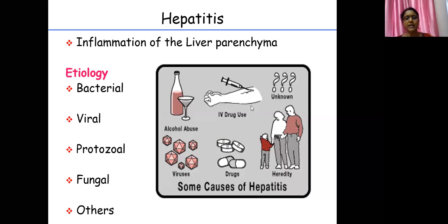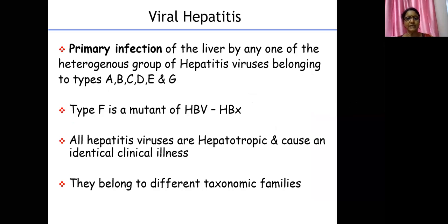There can be infectious and non-infectious causes. Among the infectious agents, it can be bacterial, viral, protozoal, fungal, etc. Non-infectious causes include alcoholic hepatitis, IV drug users, hereditary factors, as well as drug-induced hepatitis — like paracetamol hepatitis. Viral hepatitis is primary infection of the liver by any one of these hepatotropic viruses.